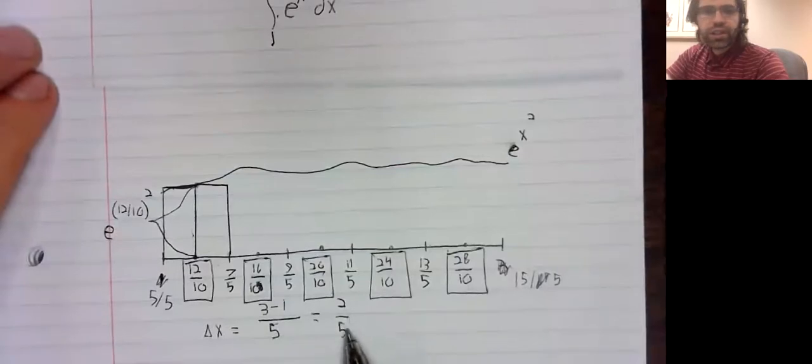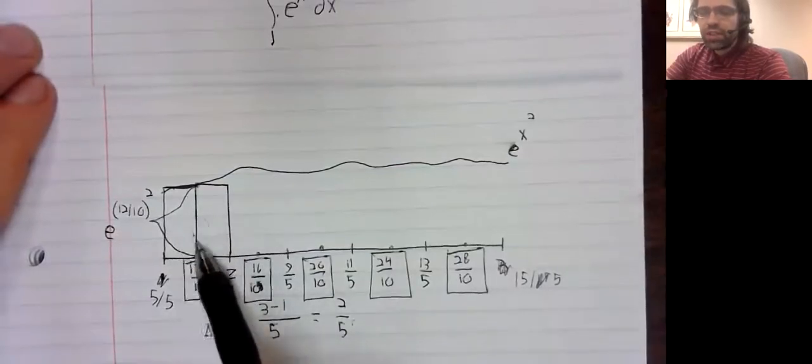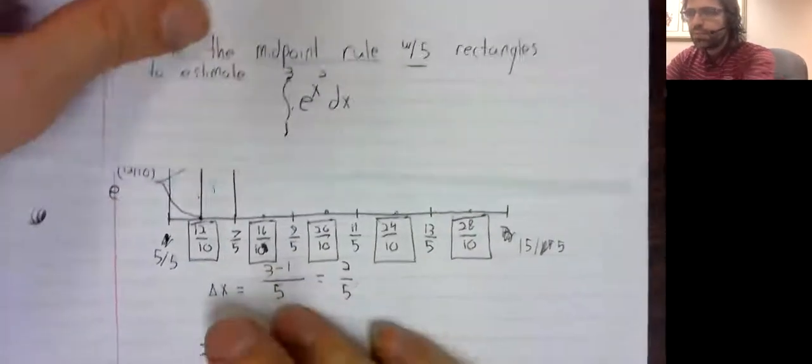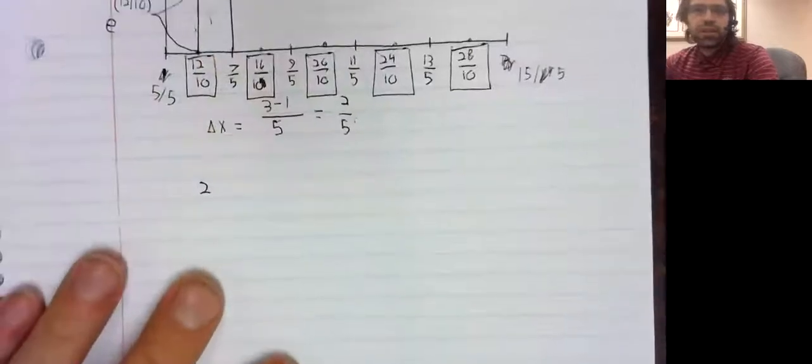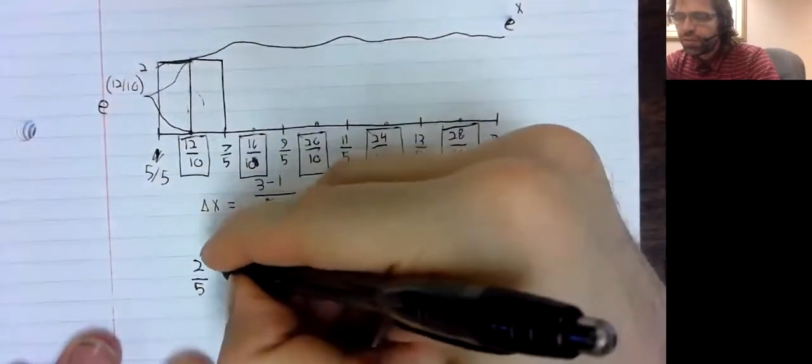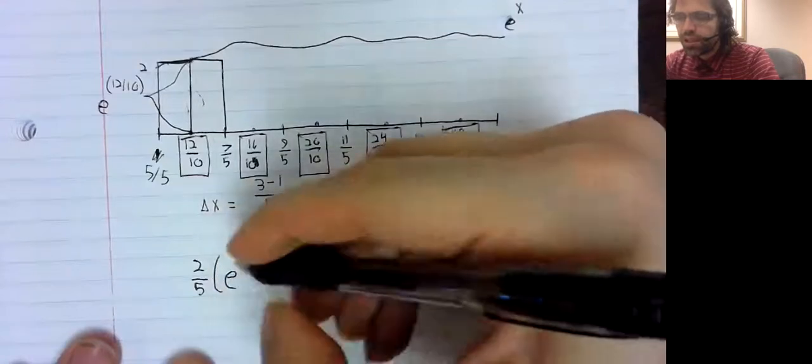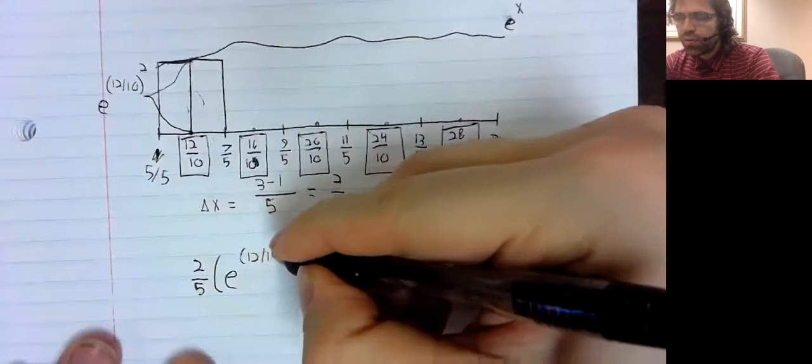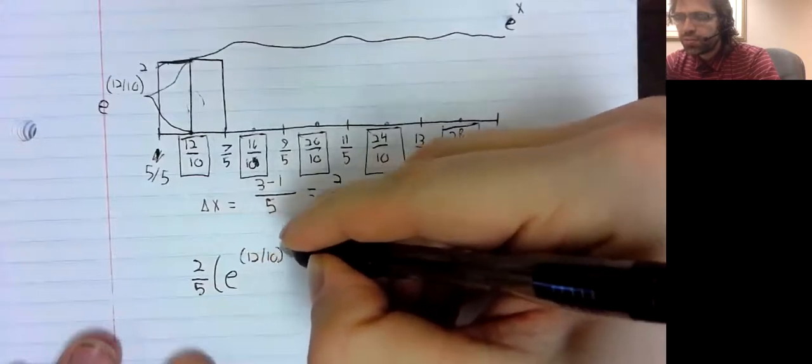There it is, delta x. So, the area of this rectangle is two-fifths times e to the 12-tenths squared.